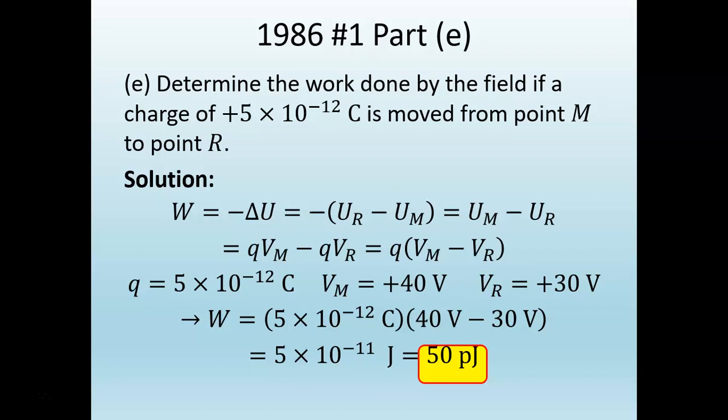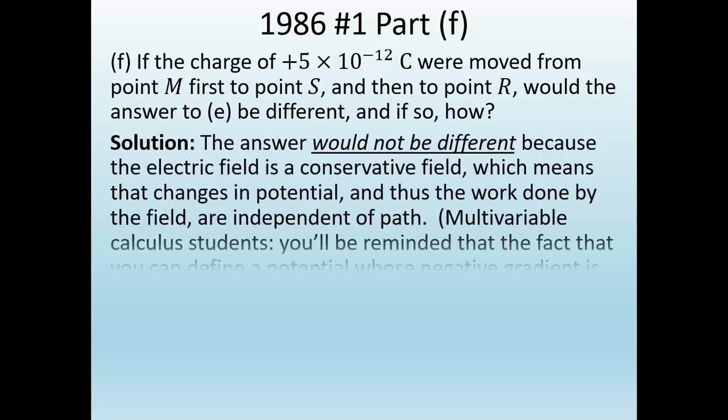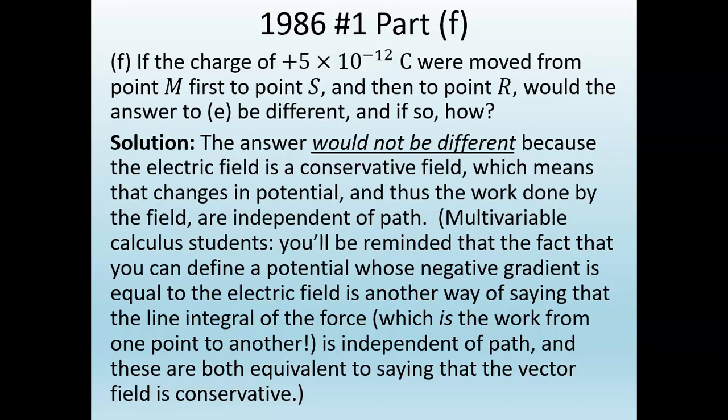For Part F: if that charge were moved from point M first to point S, and then back to point R, would the answer to Part E be different? No — work is independent of path because we are dealing with a conservative force field. We know this because the electric field can be written as the negative gradient of the electric potential, which is a scalar field. Since the vector field is conservative, the work is independent of path.